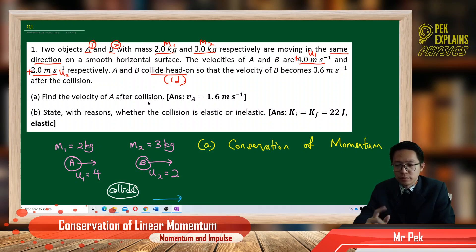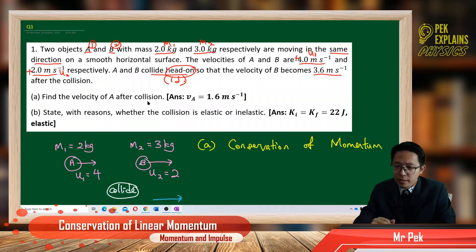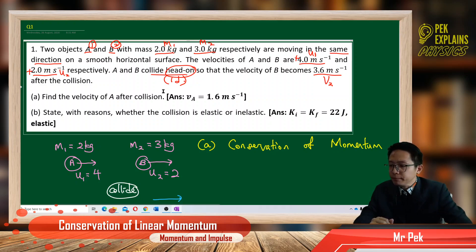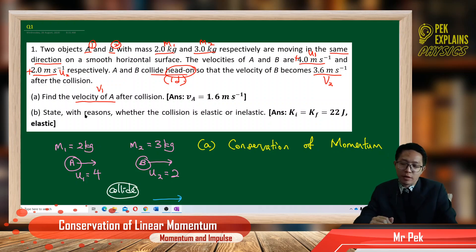They collide head on, so this is considered a one-dimensional collision — only one component, no X-Y component. Head on means only one dimension. So the velocity of B becomes 3.6 m/s after the collision — this is the final velocity for B, which is V2. We want to find V1, the final velocity for object A after collision.